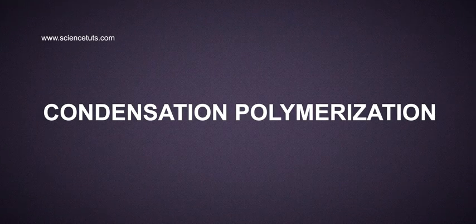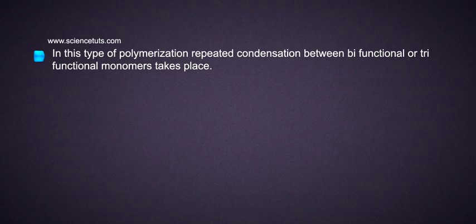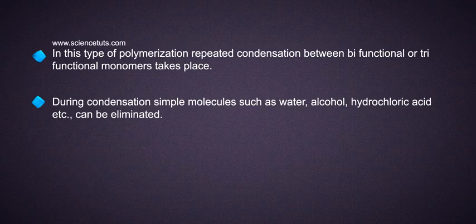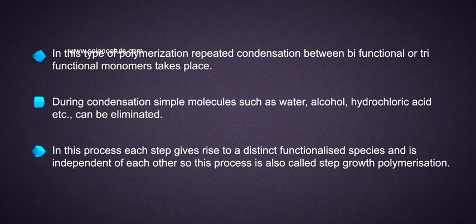Condensation Polymerization: In this type of polymerization, repeated condensation between bifunctional or trifunctional monomers takes place. During condensation, simple molecules such as water, alcohol, hydrochloric acid, etc. can be eliminated. In this process, each step gives rise to a distinct functionalized species and is independent of each other, so this process is also called Step Growth Polymerization.